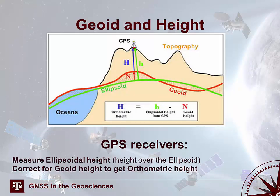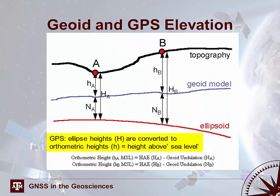GPS receivers measure the ellipsoidal height, represented by little h in this diagram, and they correct for geoid height, represented by N, to get the orthometric height, big H, which is the height above mean sea level. We're most interested in many instances with the orthometric height or height above mean sea level. Here's another example of how the different surfaces compare and relate to each other. The three surfaces essential to understanding height are the ellipsoid, the geoid, and the topographic surface.